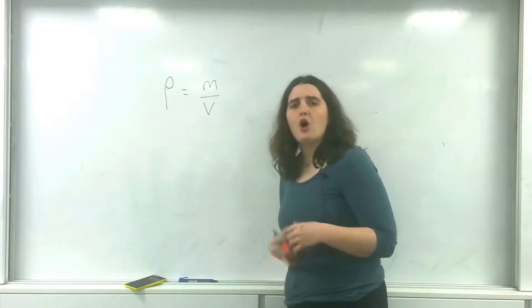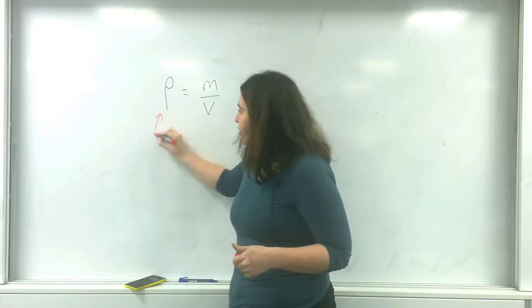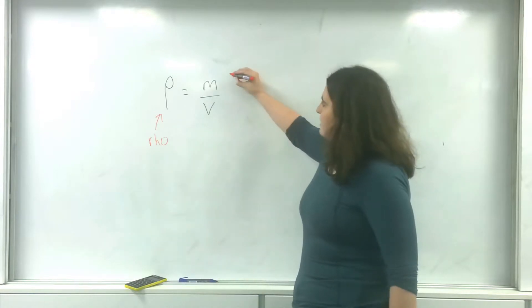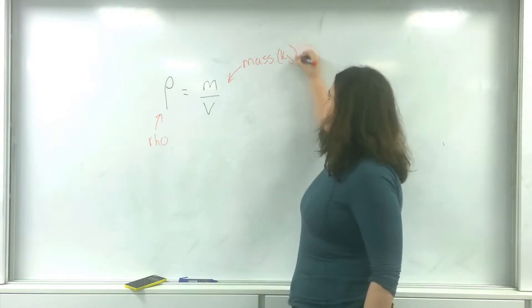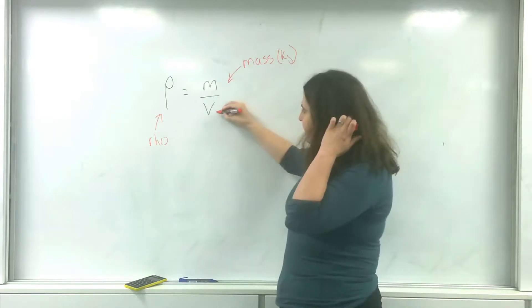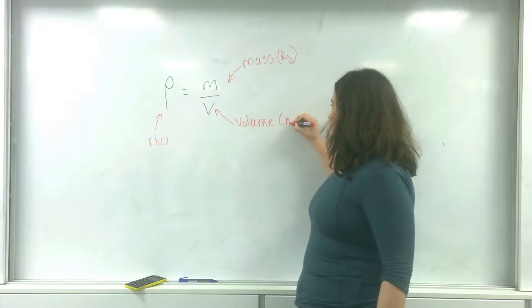This is the equation for that. Density, or this letter here which is rho, is an object's mass in kilograms divided by its volume in meters cubed.